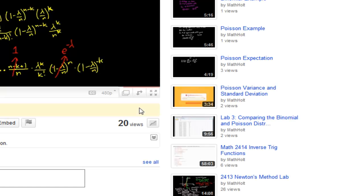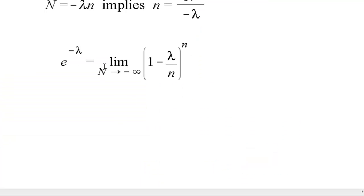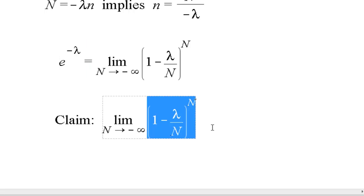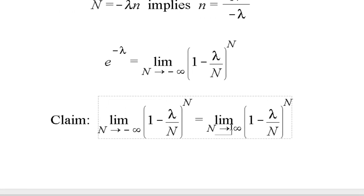The claim I make in the video is that as N tends towards positive infinity, this 1 minus lambda over N to the power of N goes to E to the minus lambda. What I now have concluded here is that as N tends towards negative infinity, then this limit is negative infinity. So the claim that we're going to need to address here is that this limit as N tends towards negative infinity is the same as the limit as N tends towards positive infinity.